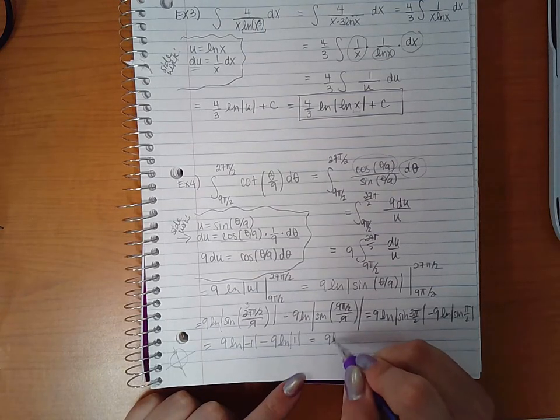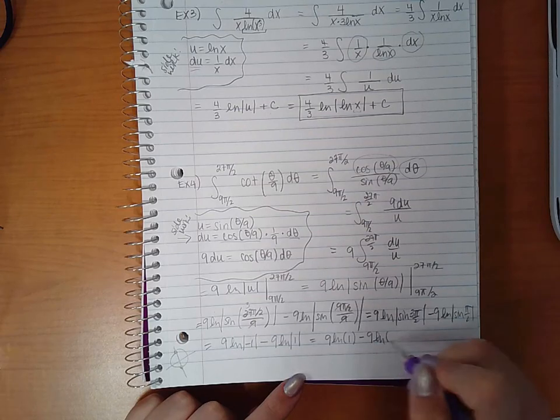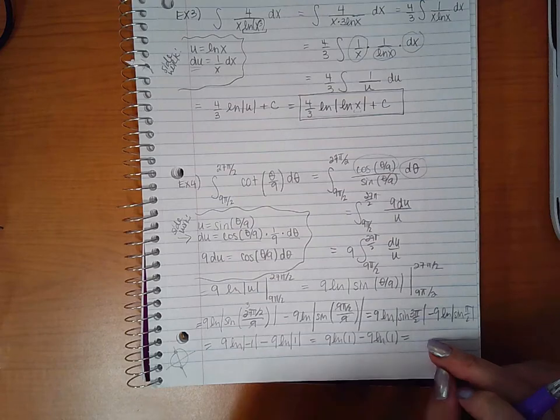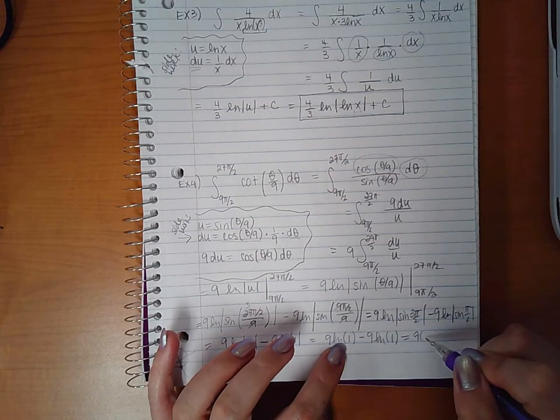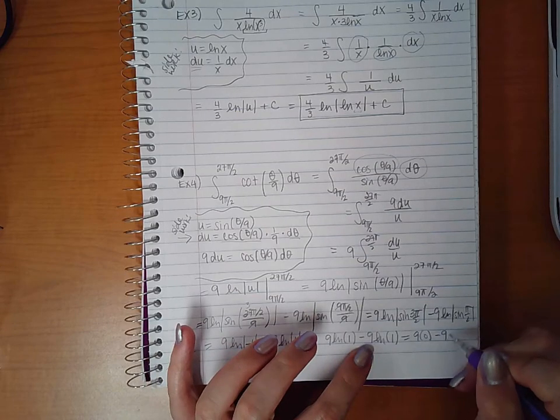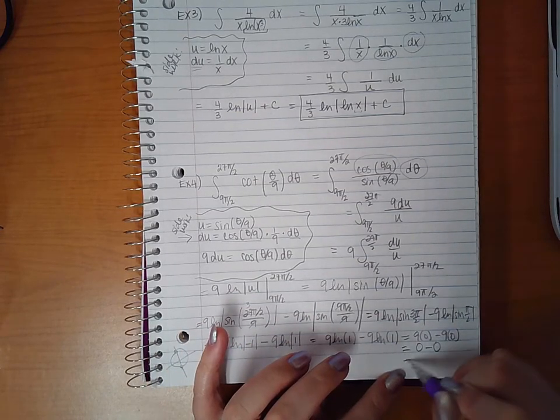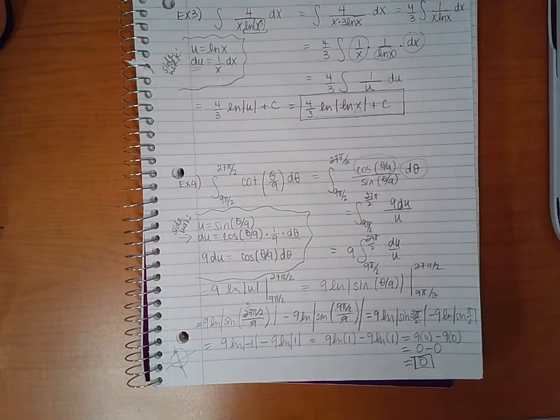Well, the absolute value of negative 1 is 1, and the absolute value of 1 is 1. Now these are the same expression, so I do know I will get 0. But ln of 1 is 0 and ln of 1 is 0, so either way we still get 0 minus 0, which is 0. So that's the value that we end up with.